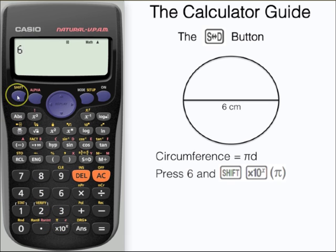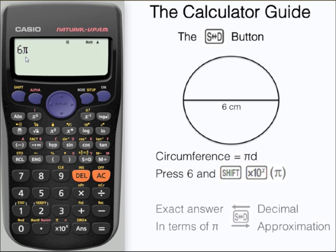For that we need to input 6. And then using the formula, the circumference equals π times diameter. We want to input a π button. We can use that with shift and then the π button.